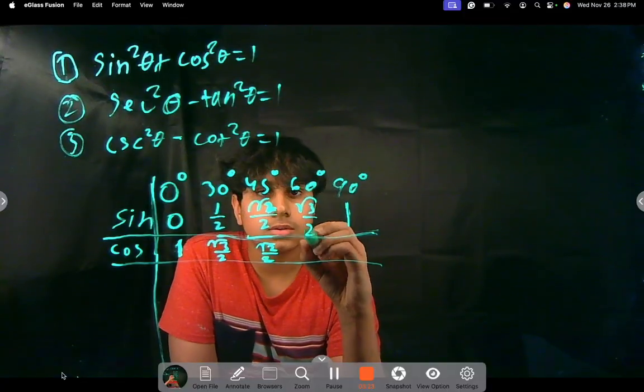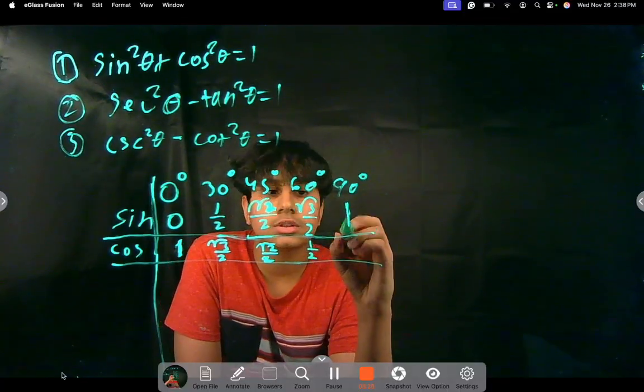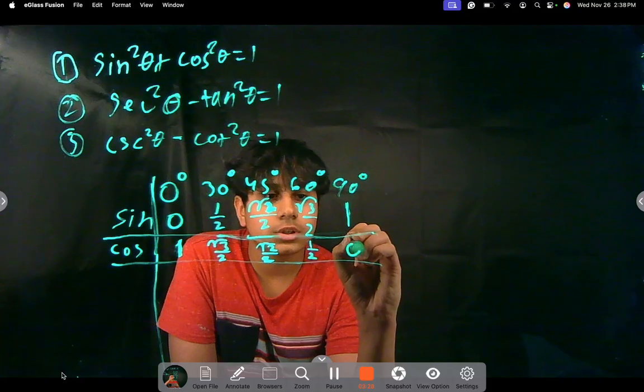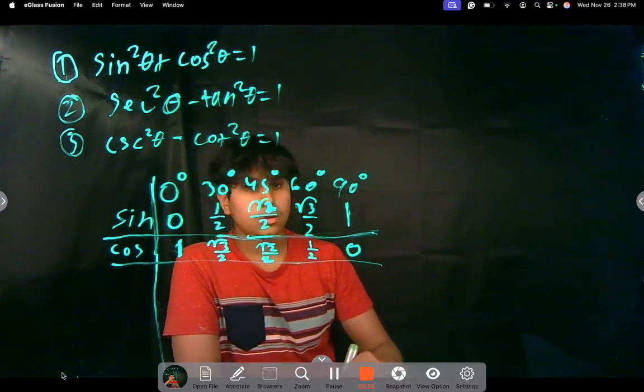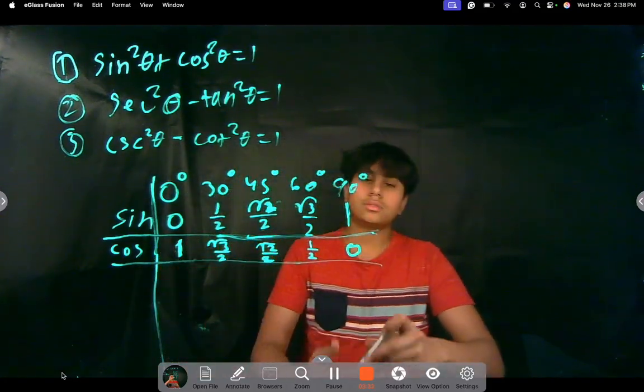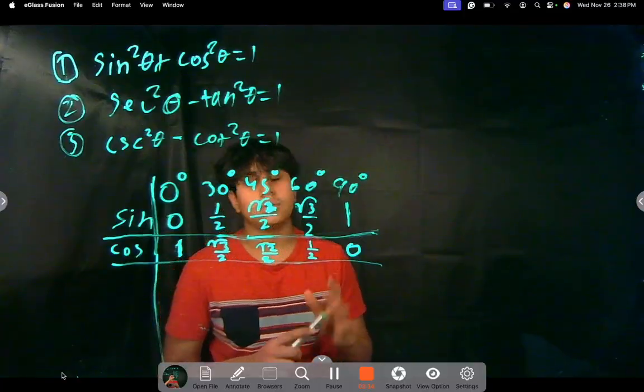So cosine of 60 is going to be 1 half, and then cosine of 90 is going to be 0. I mean, sorry, cosine of 90 is going to be 0.